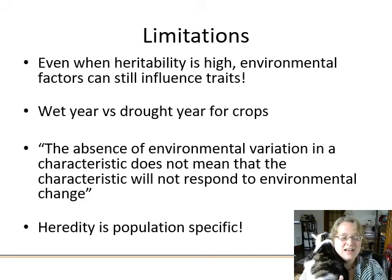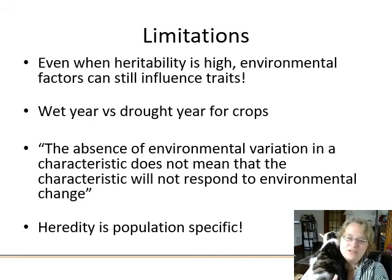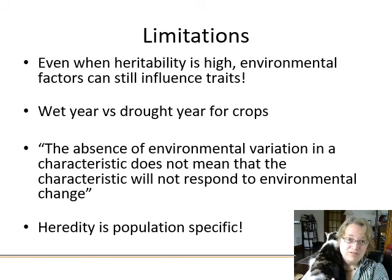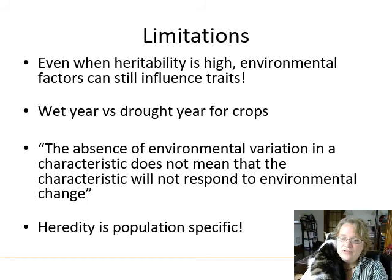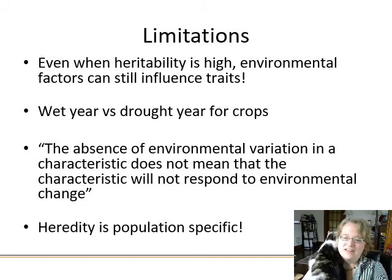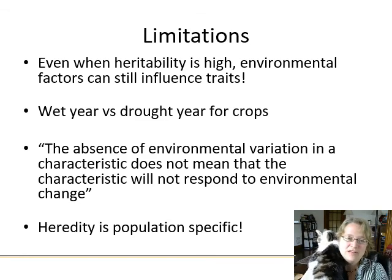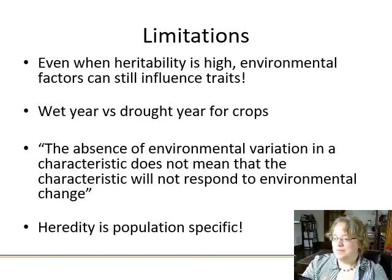Even when heritability is high, you can still have a lot of environmental factors that influence traits. If you've bred corn for kernel diameter, a terrible flood or drought in one year can drastically change what you see. The absence of observed environmental variation does not mean that the trait doesn't respond to environmental variation — it just means you didn't see it. You can still have massive phenotypic variability even in genotypically identical organisms depending on what happens that particular year.